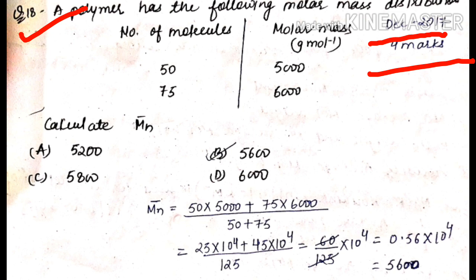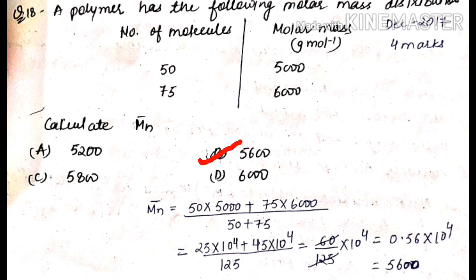Again from December 2017 for four marks: a polymer has a molar mass distribution with number of molecules and molar mass given. Calculate the number average molar mass. Using M̄N = (N1M1 + N2M2) / (N1 + N2) = (50 × 5000 + 75 × M2) / (50 + 75). After calculation, the answer is 5600. So the answer is B.